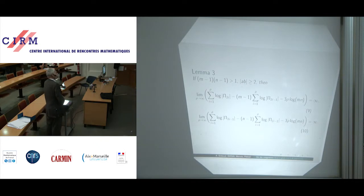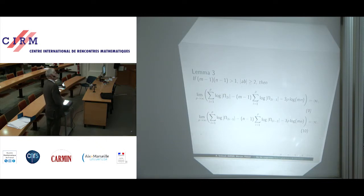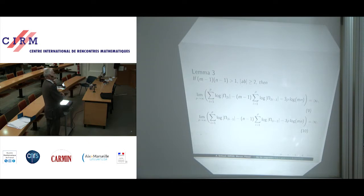Lemma 3: if (m−1)(n−1) is greater than 1, and |ab| is in absolute value greater than or equal to 2, then the limit for rho tending to infinity of a complicated difference — which you see on screen — is infinity, and also another complicated difference is likewise infinity.